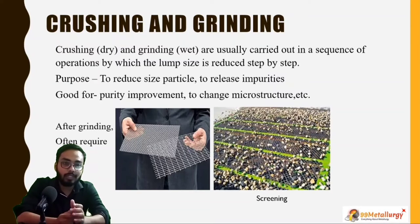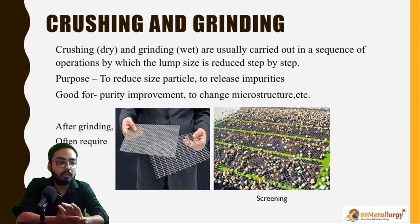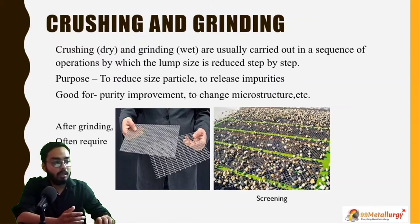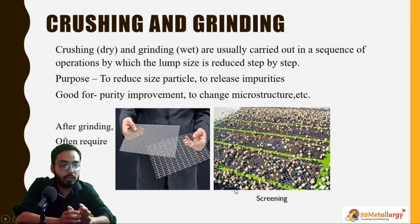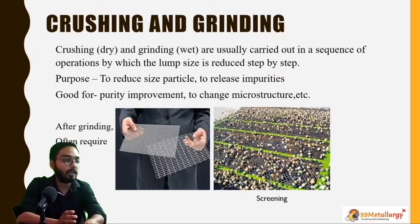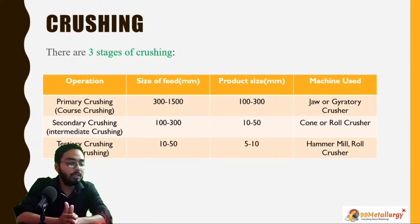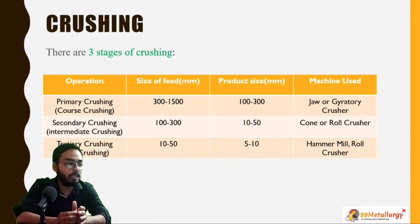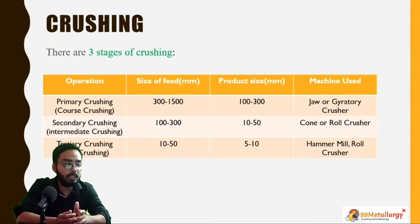After crushing and grinding, we do screening. Screening is done because particles that are not the required size are unequal and are eliminated through screening. Crushing has three stages: primary crushing, secondary crushing, and tertiary crushing.